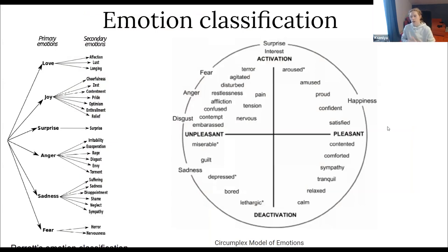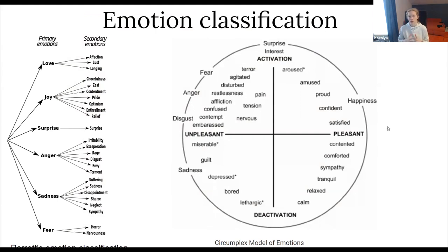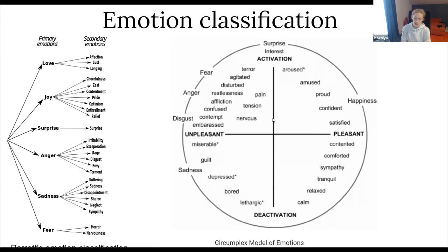There are different classifications of emotions. In the classification of Parod, primary emotions are distinguished and subdivided into secondary ones. There are also classifications with two or three vectors. The circumplex model of emotions, developed by James Russell, suggests that emotions are distributed in a two-dimensional circular space containing arousal and valence dimensions — an activation dimension and a pleasant/unpleasant dimension.